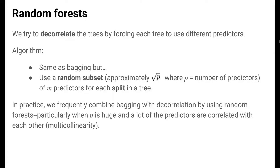Tree decorrelation is the key idea behind the random forests algorithm. In random forests, we try to decorrelate the trees by forcing every tree to use a different subset of predictors. The algorithm is the same as bagging, but with one small tweak: in bagging, every split considers all possible predictors, but in random forests, every split is only allowed to consider a random subset of m predictors. We typically pick m to be about the square root of p, where p is the total number of predictors. In practice, combining bagging with tree decorrelation via random forests works particularly well when p is huge and many predictors are correlated.